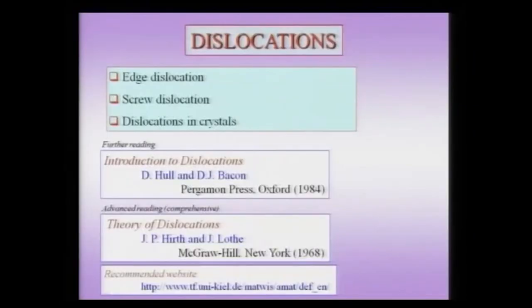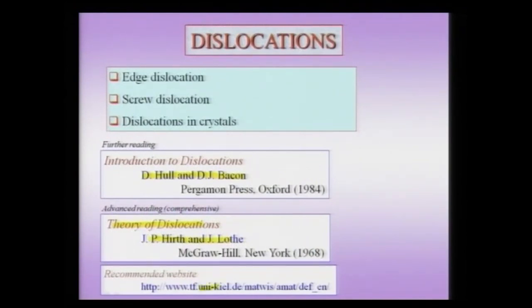There is a lot of very good literature on dislocations. A nice interesting introductory text would be by Hull and Bacon, which forms a nice interesting reading. For people interested in more advanced concepts and a comprehensive treatment, the Theory of Dislocations by Hearth and Loth is a very good text. There are also nice websites like the one at the University of Keele, which gives comprehensive information about dislocations.